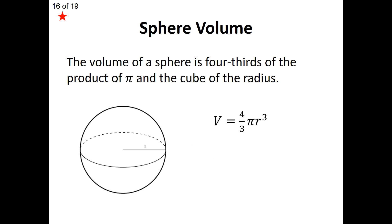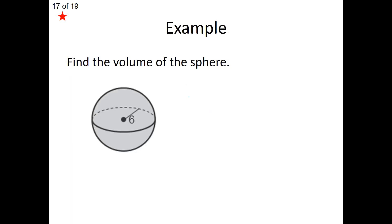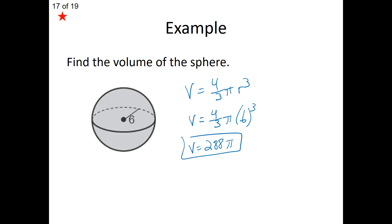Our last two volumes are the sphere and the hemisphere. The volume of a sphere is 4/3 pi r cubed — very simple, all you need is the radius. For example, with a radius of 6: plug in 4/3 times pi times 6 cubed, multiply by 4/3, and we get 288 pi as the volume of that sphere.